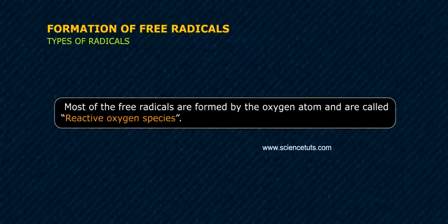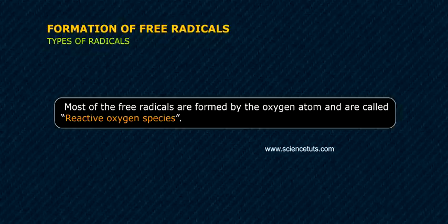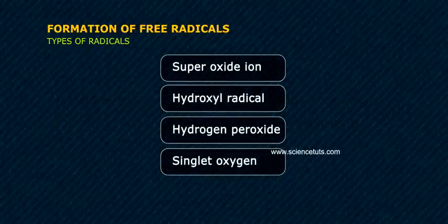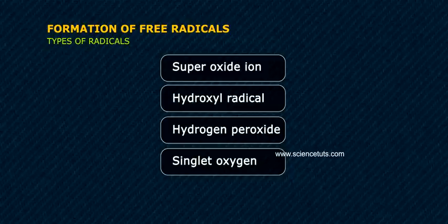Types of radicals. Most free radicals are formed by the oxygen atom and are called reactive oxygen species, such as superoxide ion, hydroxyl radical, hydrogen peroxide, and singlet oxygen.